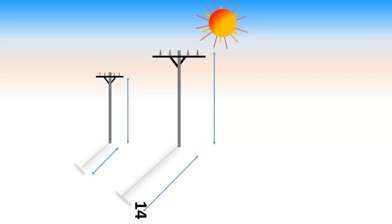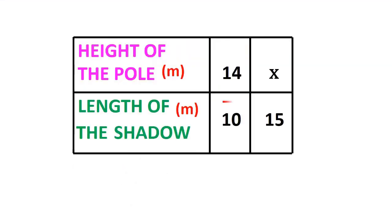An electric pole 14 meters high has a shadow of 10 meters. Find the height of another pole that has a shadow of 15 meters under similar conditions. Let the height of another pole be x meters. When the length of the shadow increases, the height of the object also increases. Therefore, this is a case of direct proportion.